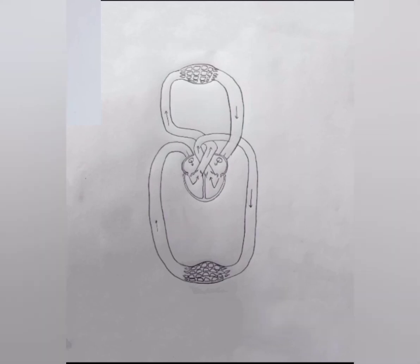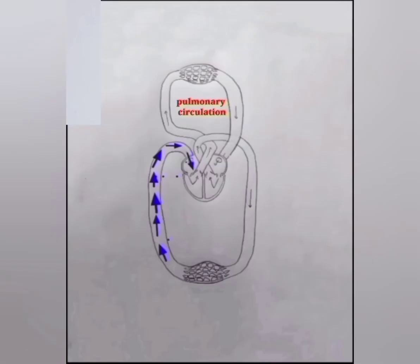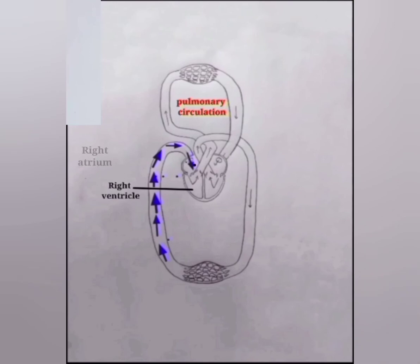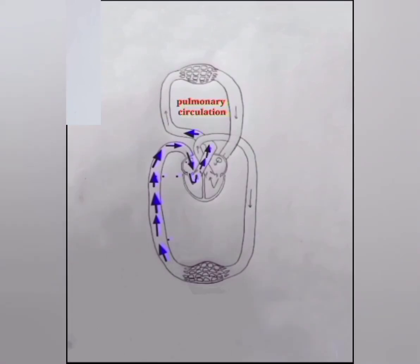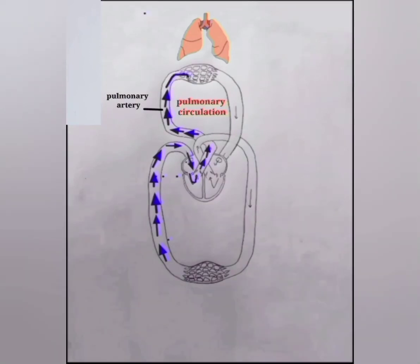Now let's look at the pulmonary circulation. Pulmonary circulation starts from the right ventricle. The right ventricle receives deoxygenated blood from the right atrium. Once the right ventricle fills with blood, it contracts, forcing the pulmonary valve open and blood passes to the lungs through the pulmonary artery.